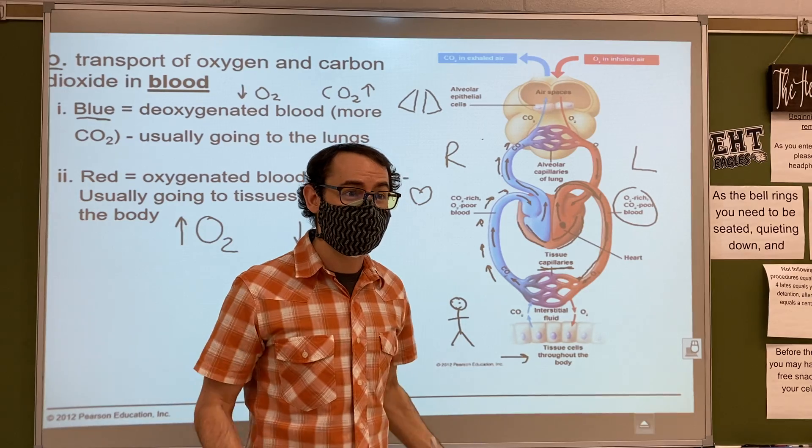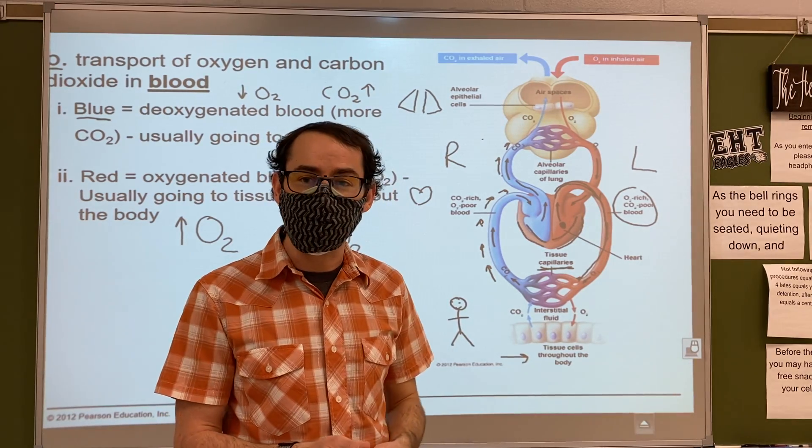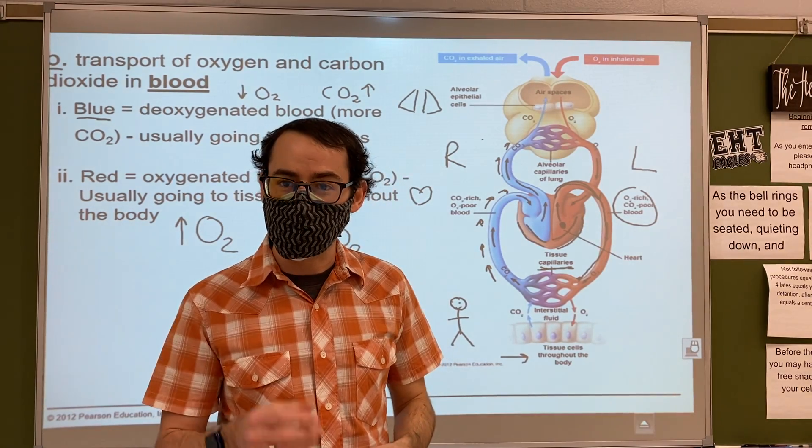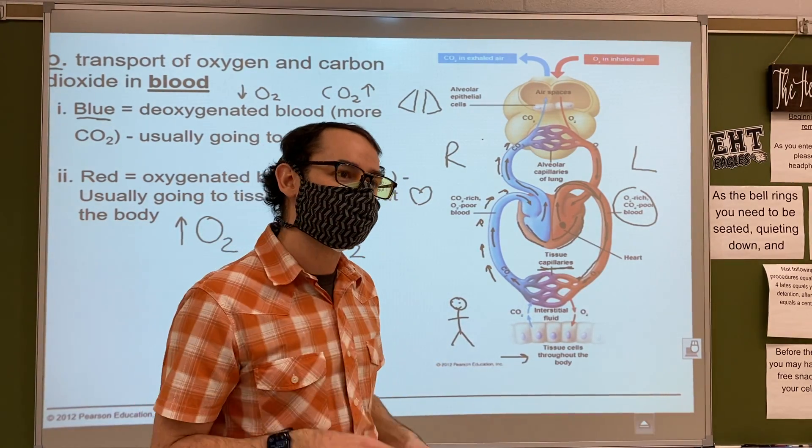How long does this circle go for? About three months - your one red blood cell lasts about three months.